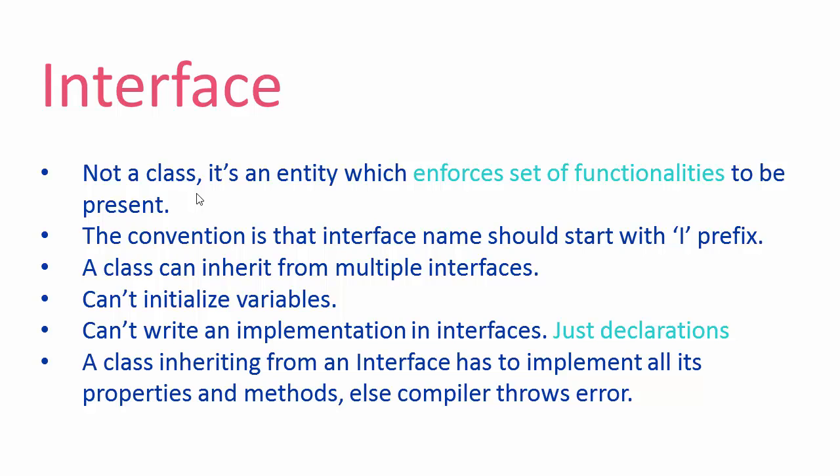An interface enforces the child class to implement a set of functionalities. Just like in an abstract class where an abstract member was mandatory to implement in the child class, similarly all the methods written in an interface must be implemented inside the child class. There is also a naming convention — we prefix 'I' before the name of the interface. A class can inherit from multiple interfaces, unlike with classes where a class can only inherit from a single class. You cannot initialize variables inside an interface, and cannot write implementation — it contains only declarations. The implementation is done inside the child class inheriting from the interface, and it is mandatory; otherwise the compiler will throw an error.